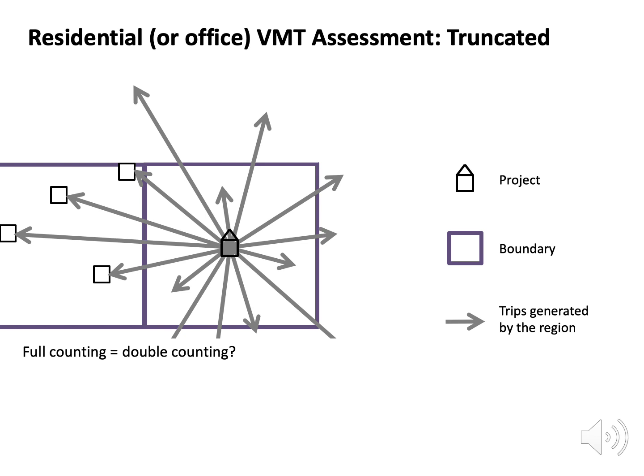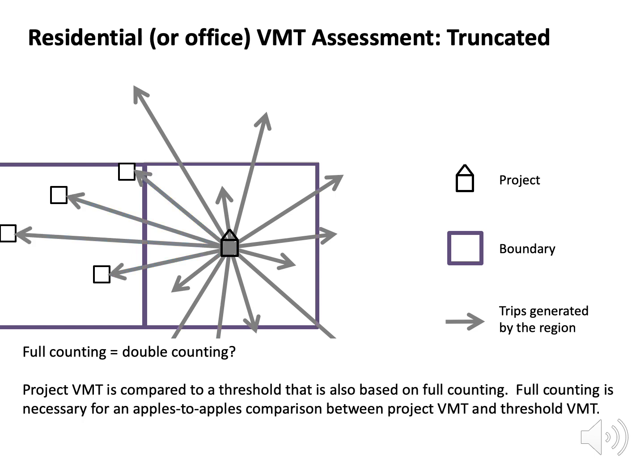But doesn't counting trips all the way to their destination in another jurisdiction mean you're double counting them, since neighboring jurisdictions would also count those trips? The answer is that some cross-boundary trips may in fact be counted in each jurisdiction. But trips between jurisdictions would also be counted in each jurisdiction when developing the thresholds. Project VMT is held up against threshold VMT, and if both are based on full counting, the judgment of whether the project has a significant impact will be fair and accurate.